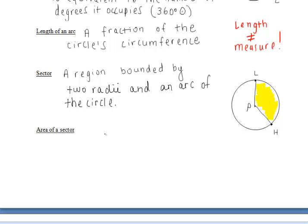It almost resembles a piece of pie or slice of pizza, whatever you want to think about. And the area of the sector can be found by taking a portion of the circle's area.